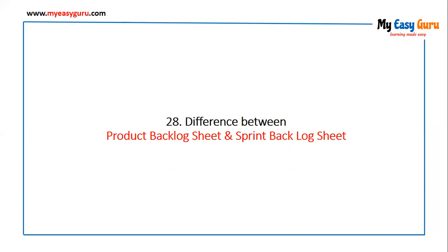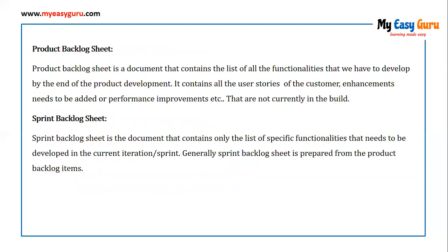What is the difference between Product Backlog Sheet and Sprint Backlog Sheet? A Product Backlog Sheet contains the list of all functionalities to be developed by the end of product development, including all user stories, enhancements, and performance improvements not currently in the build. A Sprint Backlog Sheet contains only the specific functionalities to be developed in the current iteration or sprint, and is generally prepared from product backlog items.